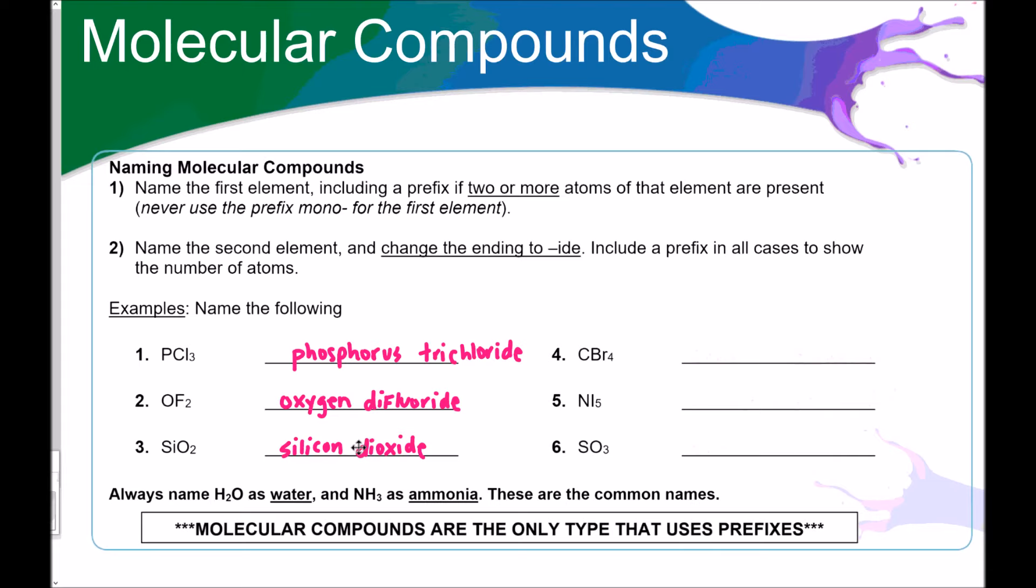Welcome back. The answer to number four is carbon tetrabromide. Number five is nitrogen pentaiodide. And number six is sulfur trioxide. At the bottom here, it says always name H2O as water and NH3 as ammonia. Remember that NH3 is actually a base. It's not molecular. Even though it's made up of nonmetals, that's a common mistake. So H2O is water. NH3 is ammonia. These are their common names.